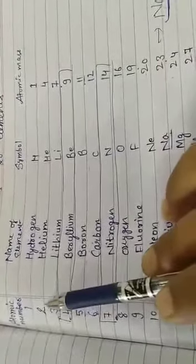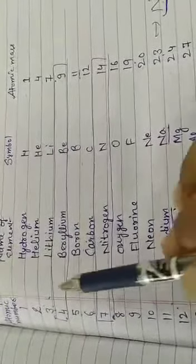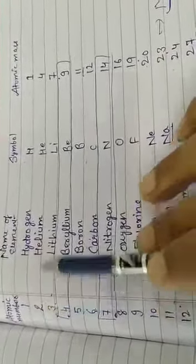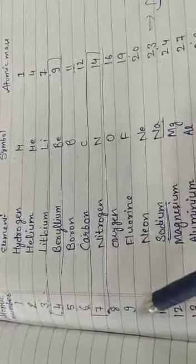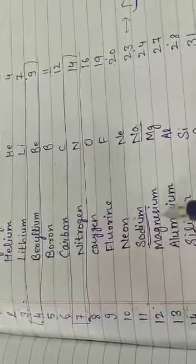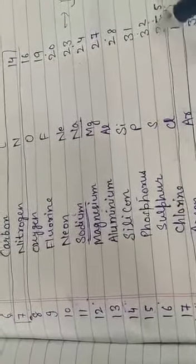Look at the even atomic numbers: 2, 4, 6, 8, 10, 12. For elements with even atomic numbers, the atomic mass is double the atomic number. Helium has atomic number 2, so its atomic mass is 4. Carbon is 6, so mass is 12. Oxygen is 8, mass is 16. Neon is 10, mass is 20. Magnesium is 12, mass is 24. Silicon is 14, mass is 28. Sulfur is 16, mass is 32. For odd numbers, you can follow a similar pattern.